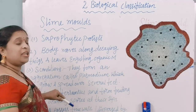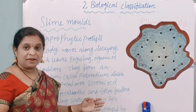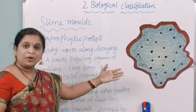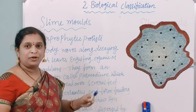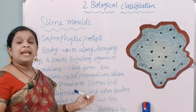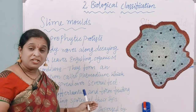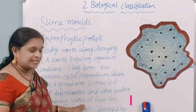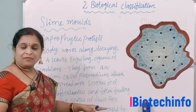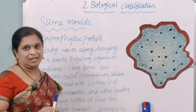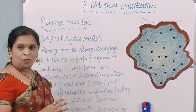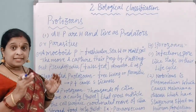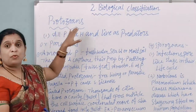In unfavorable conditions, the plasmodium differentiates and forms fruiting bodies called spores. In suitable conditions it forms an aggregation called plasmodium with pseudopodia; in unfavorable conditions the plasmodium differentiates into fruiting bodies bearing spores at their tips. These spores possess true walls and are dispersed by air currents.